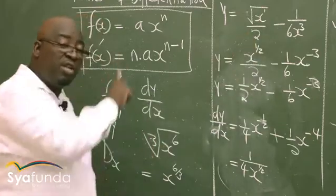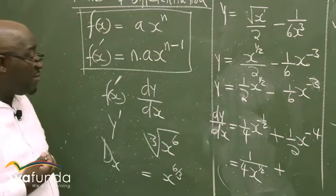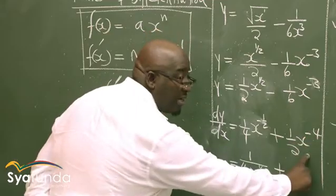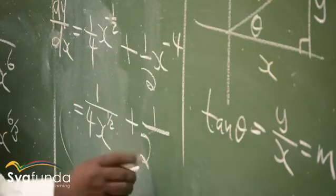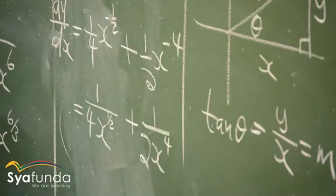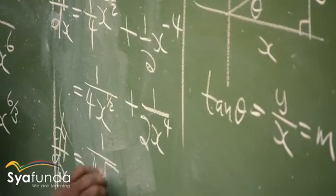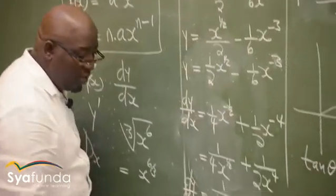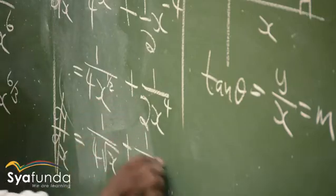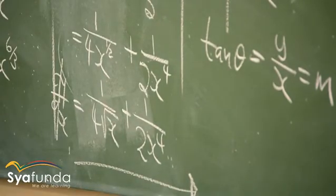Making the exponents positive, our dy/dx becomes: 1/(4√x) + 1/(2x⁴). Because x^(1/2) is √x and x^(−4) moves to the denominator as x⁴. That is the final answer using the differentiation rules.